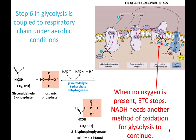When no oxygen is present, the electron transport chain stops because it requires oxygen as the ultimate electron acceptor. Without oxygen, glycolysis keeps producing NADH but can't recycle it back to NAD+. Soon the concentration of NADH gets very high and NAD+ gets very low. Since NAD+ is a substrate for the glyceraldehyde-3-phosphate dehydrogenase reaction, lowering its concentration changes the delta G and the reaction can no longer go forward, which would stop glycolysis.